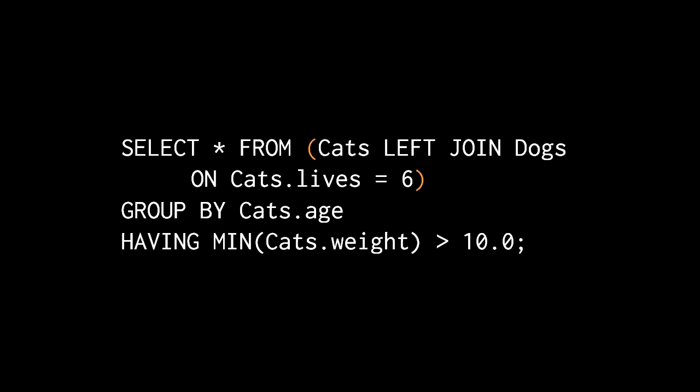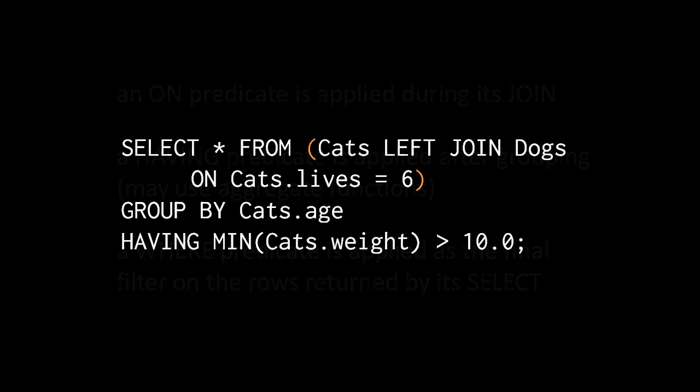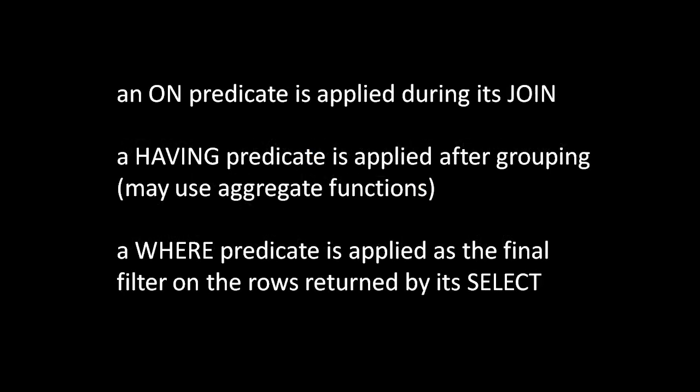You need to be clear about when these various predicate clauses get applied. The on clause is a predicate applied during a join — it's performed during the join itself. The having clause is applied immediately after grouping, assuming there is any grouping. And the where clause is the final filter on all rows returned by the select — the where always comes last.